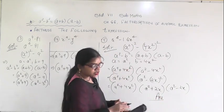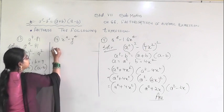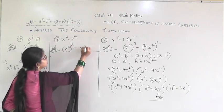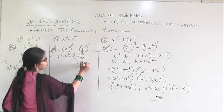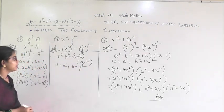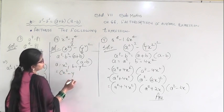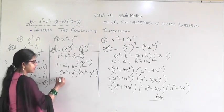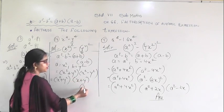The last question is x to the power 4 minus y to the power 4. Write this as (x squared) squared minus (y squared) squared. Using a squared minus b squared equals (a plus b)(a minus b), with a equal to x squared and b equal to y squared, substituting gives (x squared plus y squared)(x squared minus y squared). Again, split x squared minus y squared using the formula to get (x plus y)(x minus y). So the final answer is (x squared plus y squared)(x plus y)(x minus y).